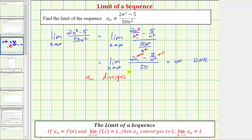Because the limit is approaching positive infinity, this also tells us that when we find more and more terms in the sequence using this formula, the terms are going to get larger and larger and increase without bound. Before we look at this graphically, let's also determine this limit using the second method — the shortcut method.